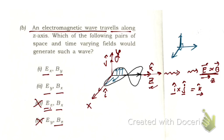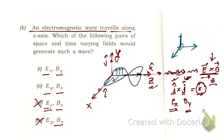Since E cross B gives the direction k-cap, and k-cap equals i cross j, E must be along i (the x-axis), giving the Ex component, and B must be along j (the y-axis). This gives us the wave propagating in the z-direction. So the first option — Ex and By — is correct.